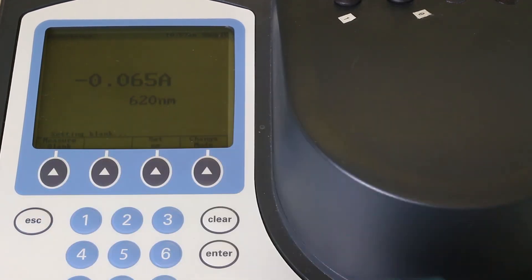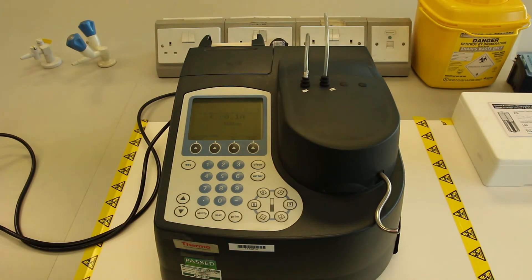Then press measure blank. This will zero the device, meaning that all absorbance or transmittance measured in later samples will be solely due to the sample you are interested in.